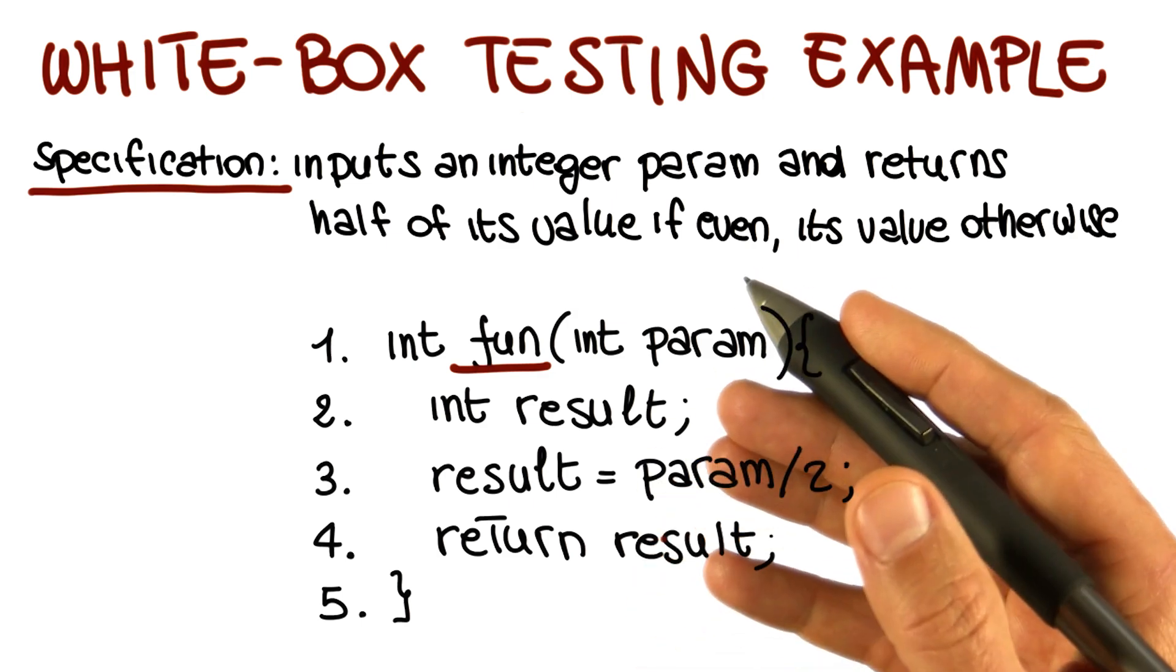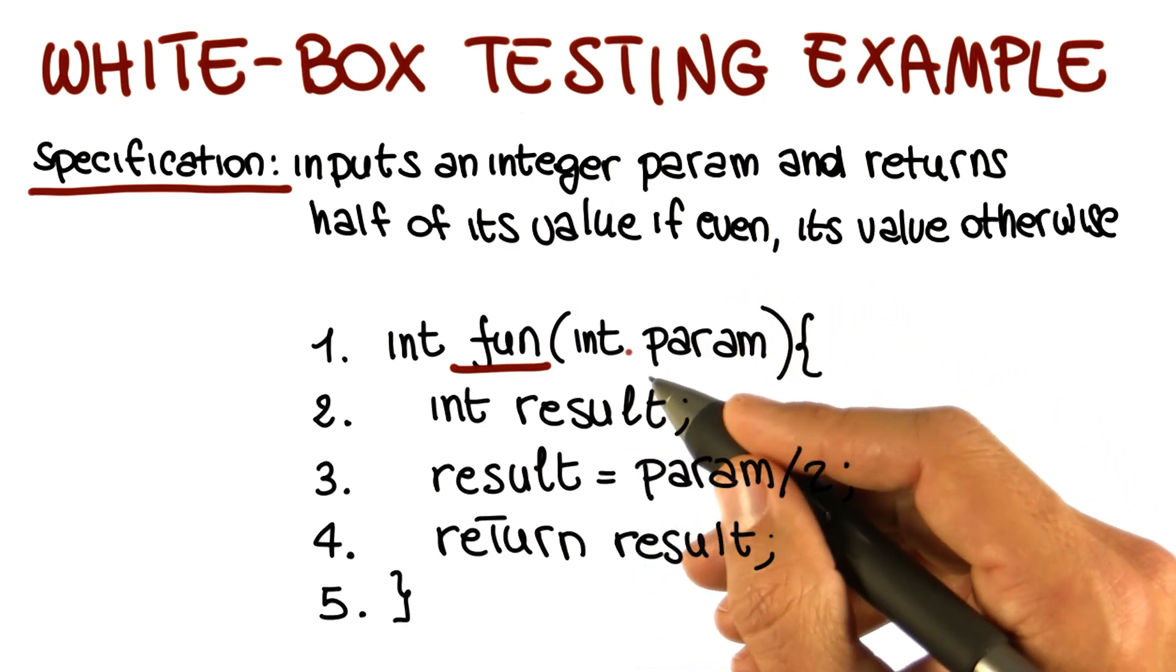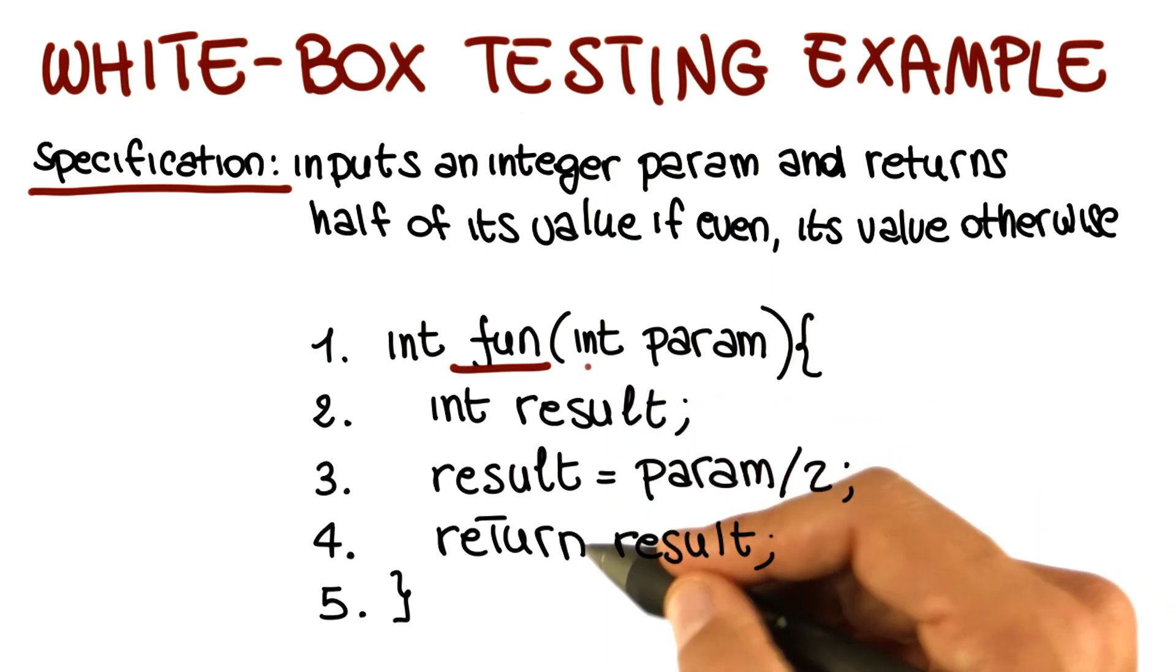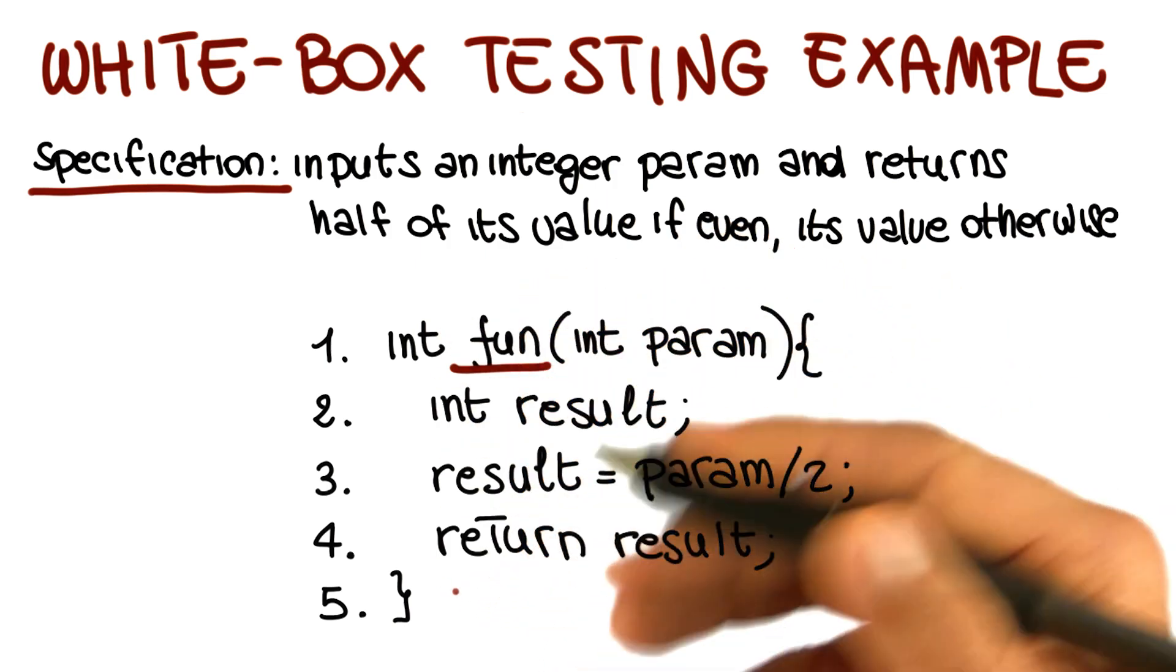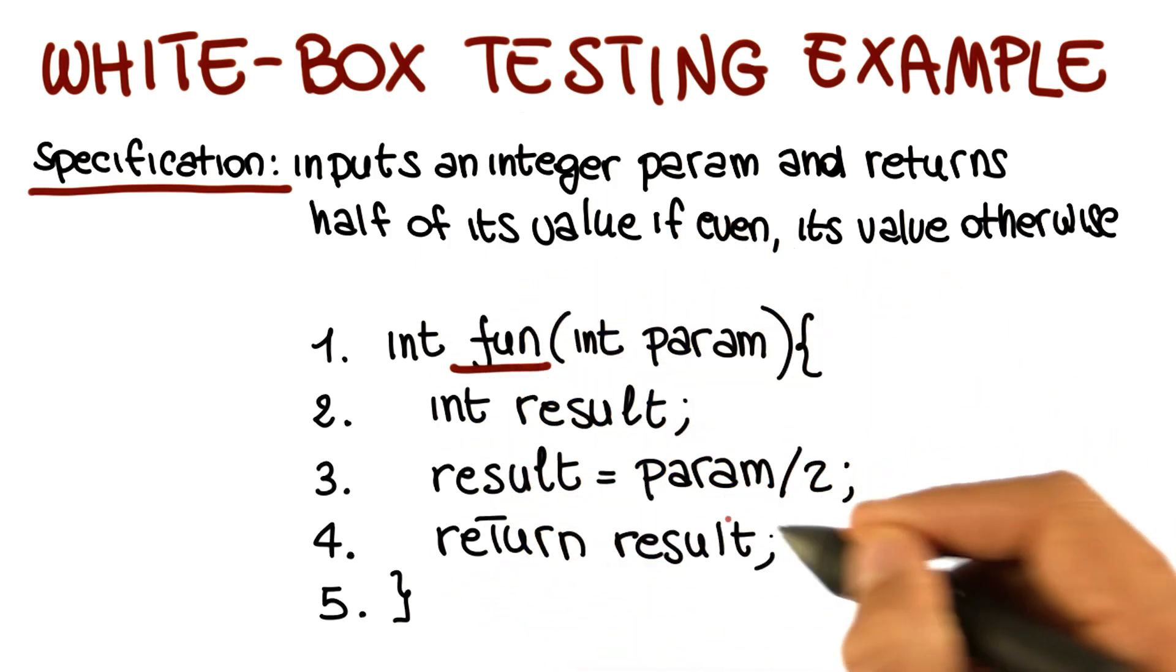So this is a case in which white box testing could easily miss the problem, because as we said, any input will exercise the code. It's just by chance that we could reveal one that revealed the problem in the code.